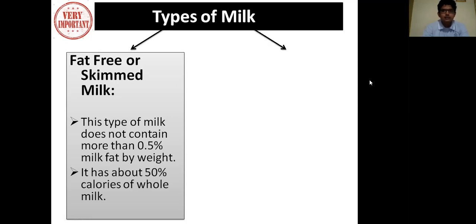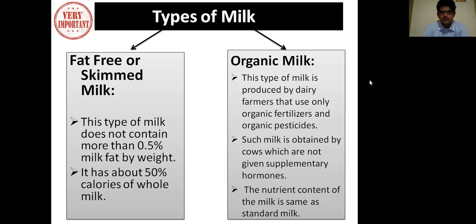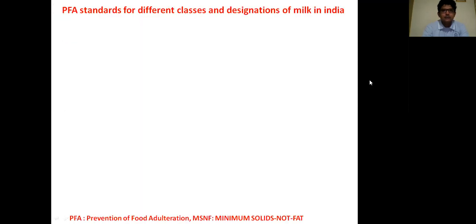The second type of milk is known as Organic Milk. This type of milk is produced by dairy farmers that use only organic fertilizers and organic pesticides. Such milk is obtained from cows which are not given supplementary hormones. The nutrient content of the milk is the same as standard milk. PFA standards for different classes and designations of milk in India are given below.